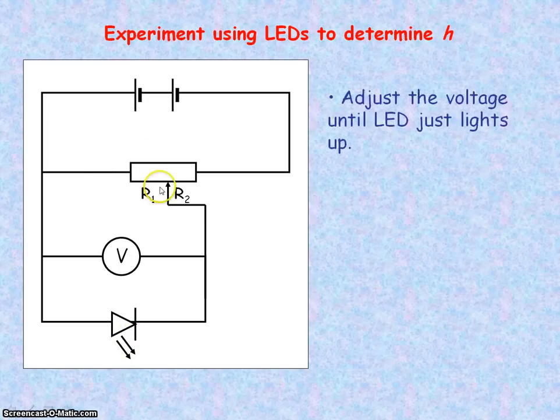We use the variable resistor to adjust the voltage across the LED until it just lights up. It's best to view the LED through a black tube so it will be easier to see when the LED just lights up without being disturbed by the ambient, that is the surrounding light.